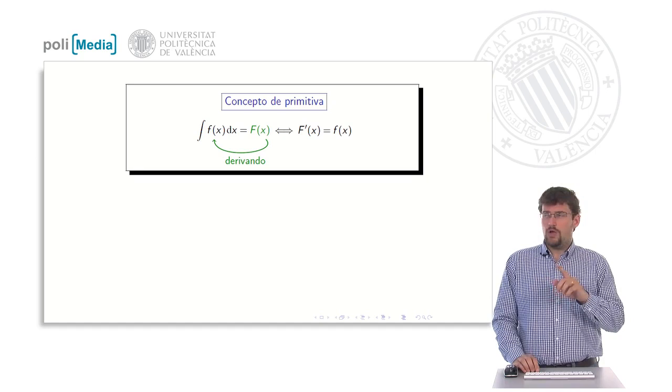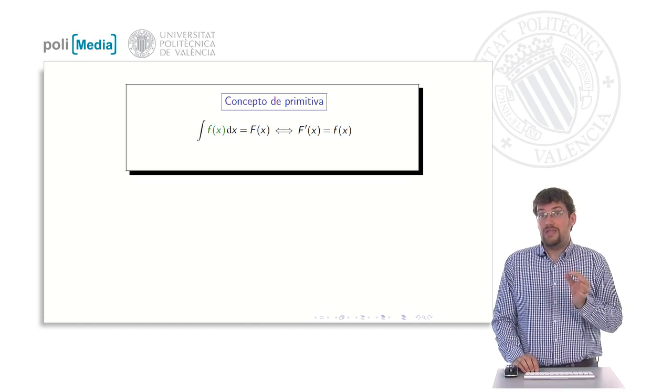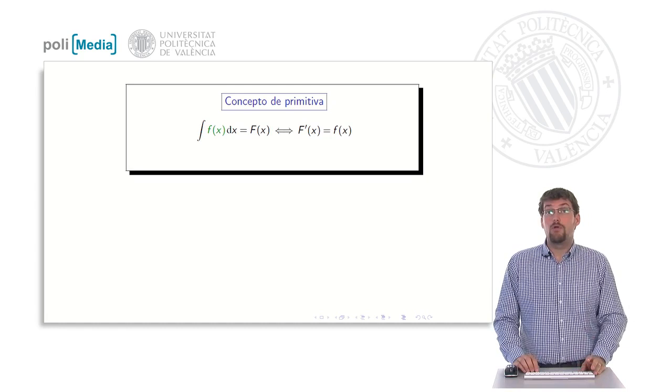If we take the uppercase F, which would be a primitive, and we derive it, we will find out what we should obtain is the small f. That is simply the idea of a primitive. The set of all the primitives is what is represented by the integral symbol.